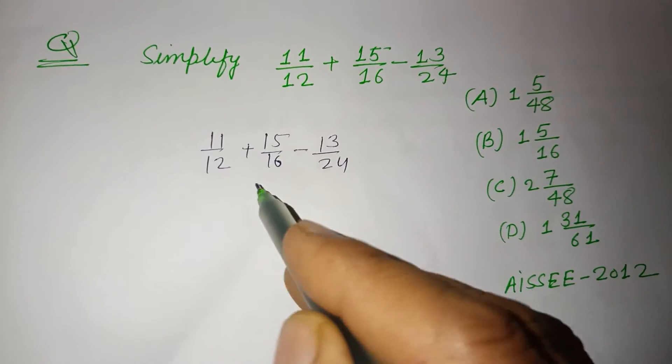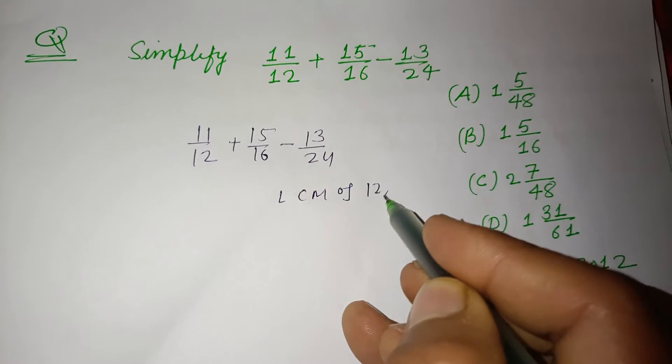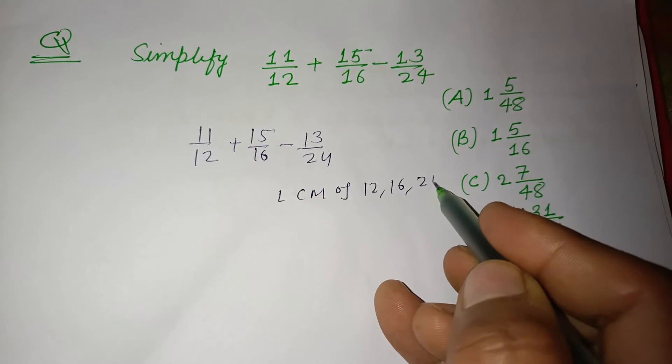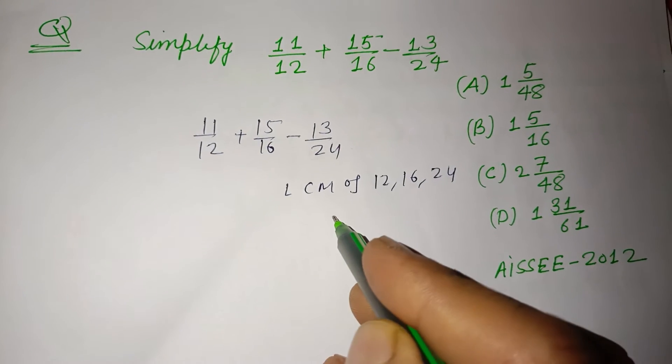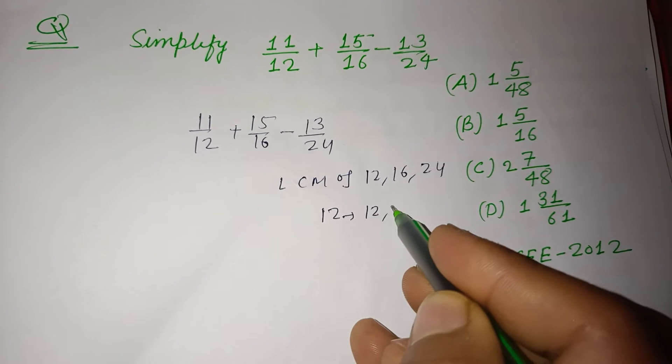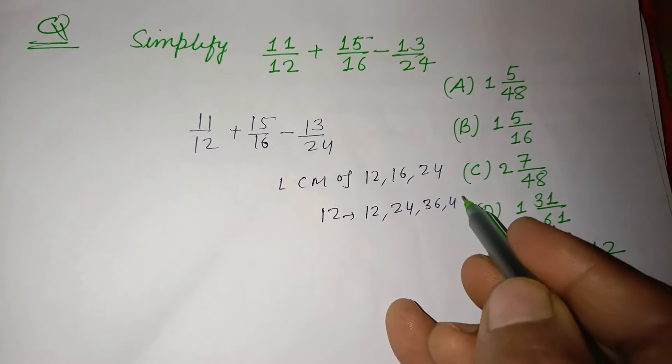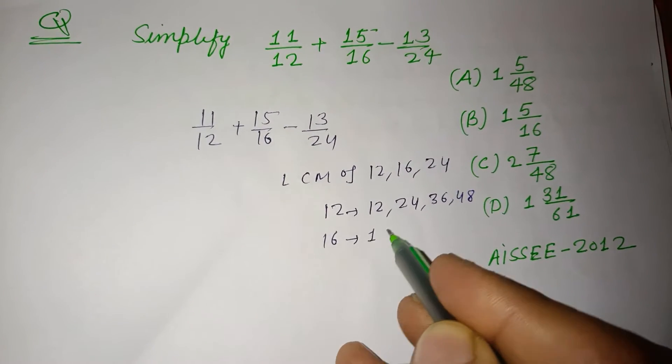We need to find the LCM of 12, 16, and 24. Multiples of 12 are 12, 24, 36, 48. Multiples of 16 are 16...